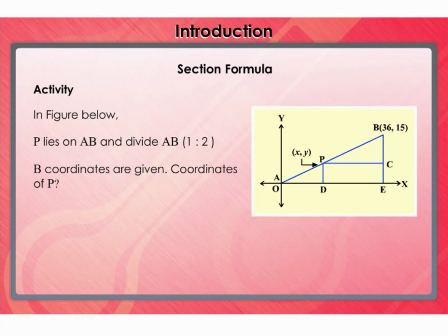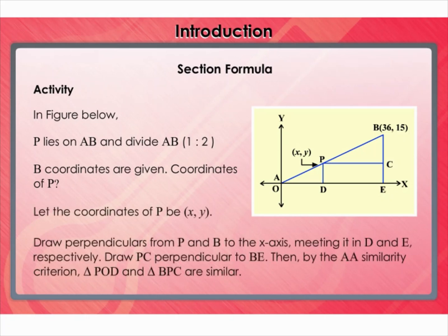Coordinates of P can be found as shown. Let the coordinates of P be (x, y). Draw perpendiculars from P and B to the x-axis, meeting it in D and E respectively. Draw PC perpendicular to BE. Then by the AA similarity criterion, triangle POD and triangle BPC are similar.